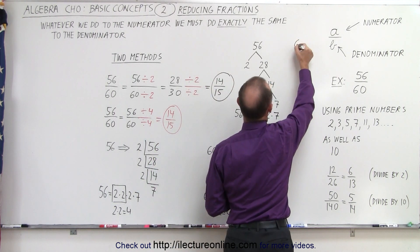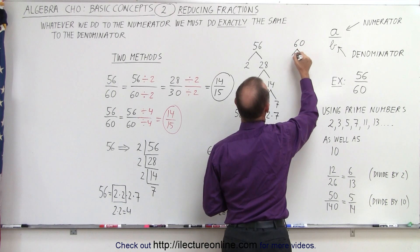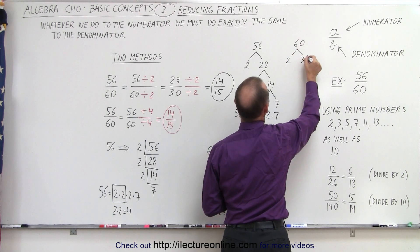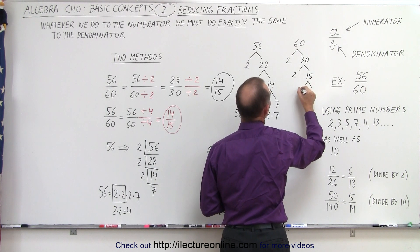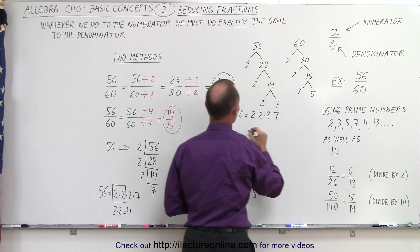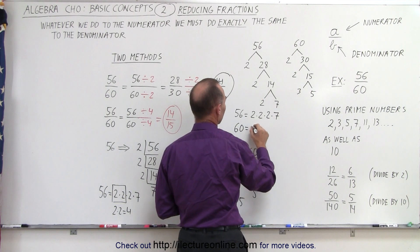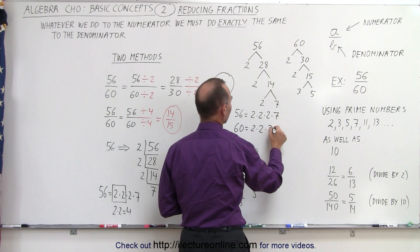We can do the same for the number 60. 60, we can divide by 2, we get 30. Again, 30 can be divided by 2 to get 15. And 15 can be divided by 3 to give us 5. Which means that 60 can be written as 2 times 2 times 3 times 5.